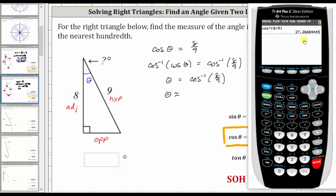Notice how there is a sixth and a thousandths place value, or a third decimal place, and therefore we round up. Theta is approximately 27.27 degrees.